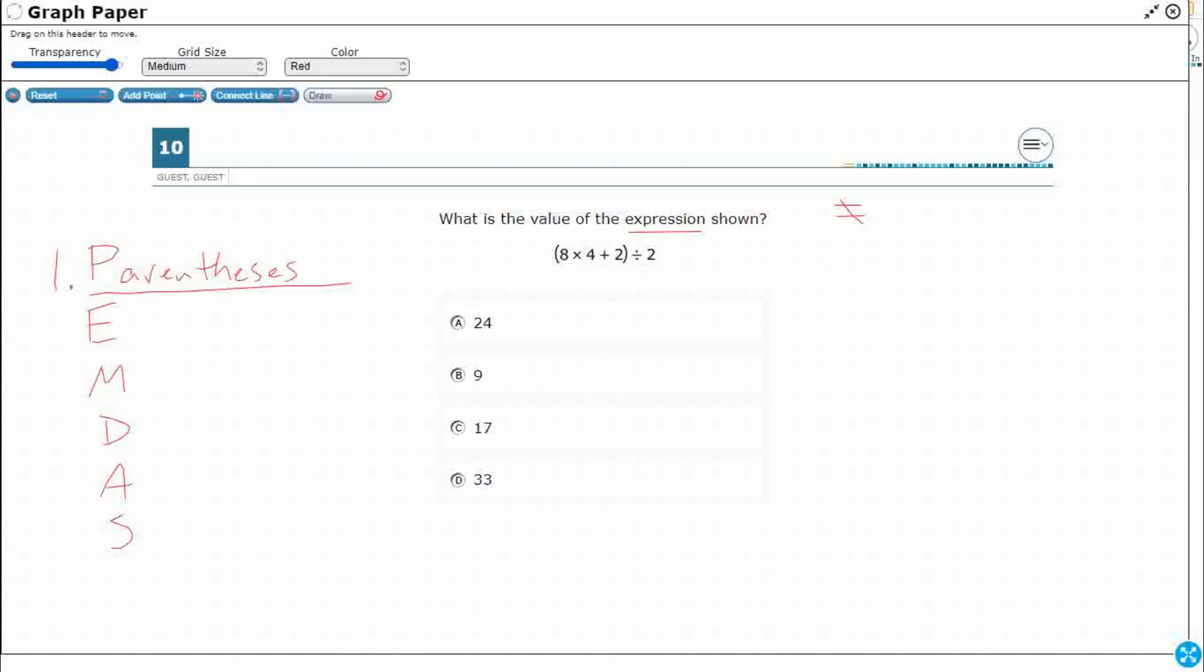We've got some parentheses here, so that's our first order of business. Within those parentheses, we just apply the order of operations. The second level, we don't really use in fifth grade, but it's good to know that it's there. You'll use that in sixth grade and above, exponent.